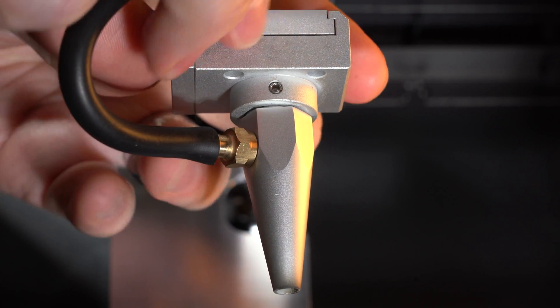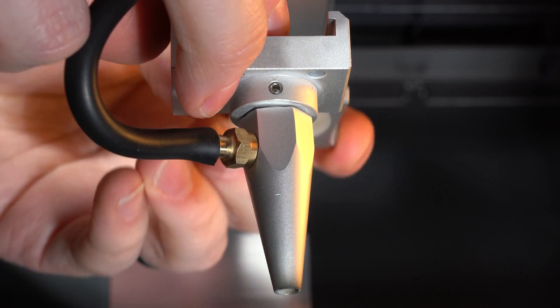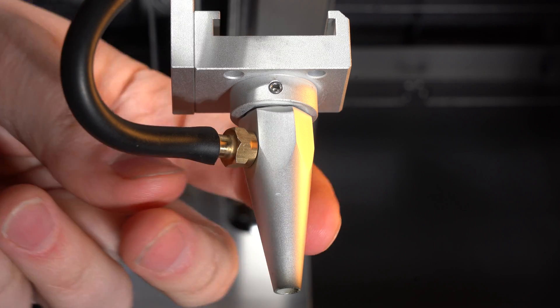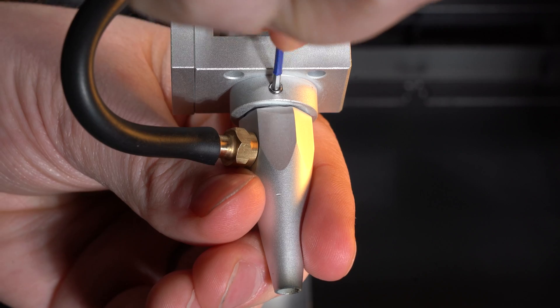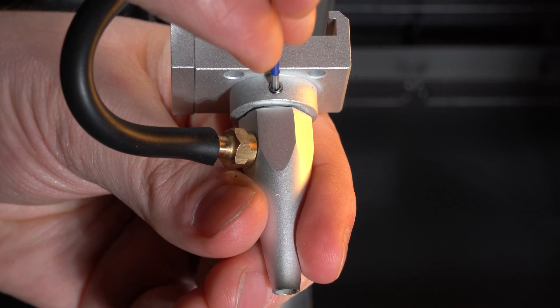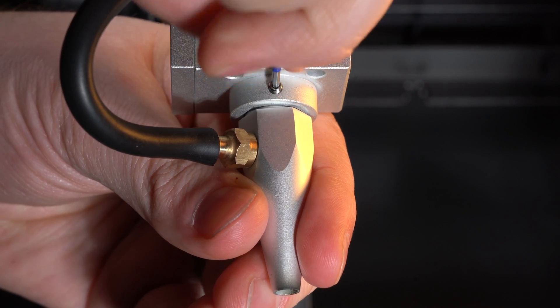First thing we want to do is remove the lens and set it aside. Using a 1.5 millimeter hex key, locate the screw above the nozzle and loosen it. You don't want to pull the screw all the way out, just enough so the air cone falls.